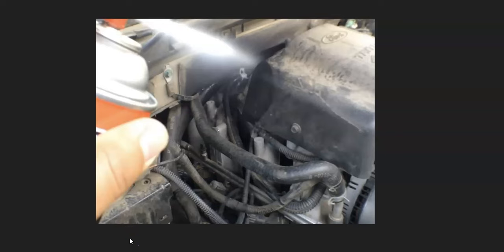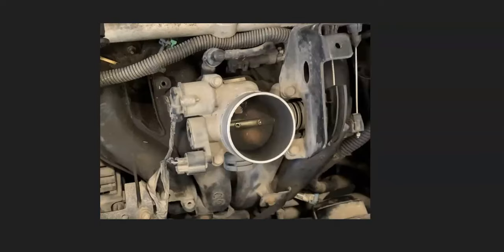Another method some mechanics use is that they'll use a liquid - they'll start up the engine, then they'll spray wherever they think there's a vacuum leak at, and if the idle changes then they know they found it. So there's some different methods you could go about trying to find a vacuum leak, and that includes the intake manifold gasket.